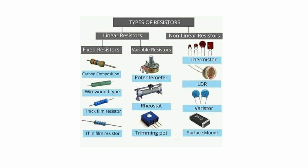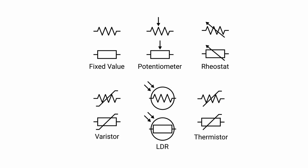Resistors are basically of two types: linear and nonlinear. We have already discussed and seen some linear resistors. There are also variable resistors such as potentiometers, rheostats, and trimming pots. Nonlinear resistors include thermistors, LDRs, varistors, and surface mount resistors. We're going to talk about their functions as well.